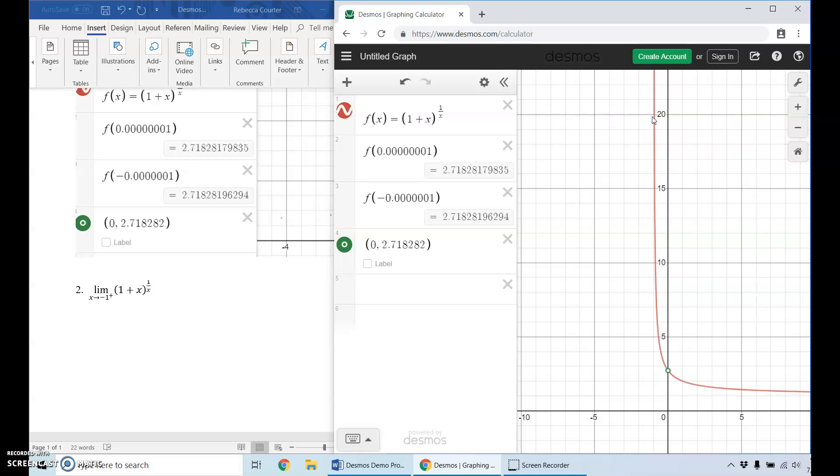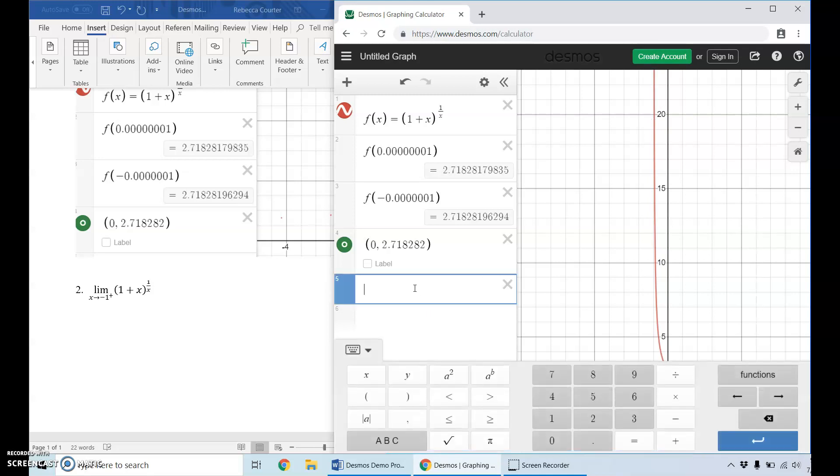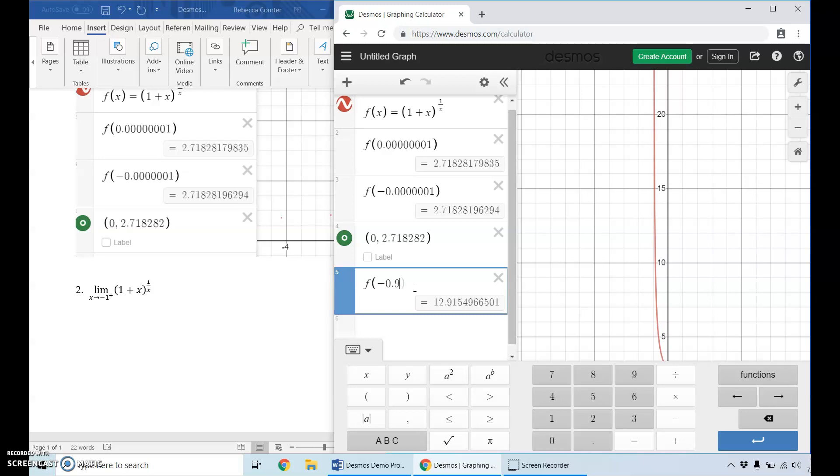So we can also calculate f of negative 0.9 and we can keep adding nines to see that yep, here it's at a hundred, a thousand, ten thousand, a hundred thousand, a million, ten million, a hundred million, and we're into scientific notation. So we can safely say that the limit as X approaches negative one from the right is infinity.